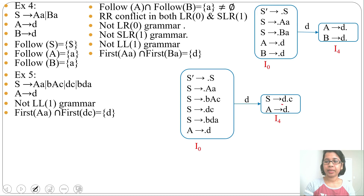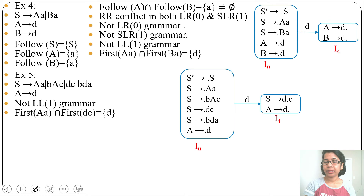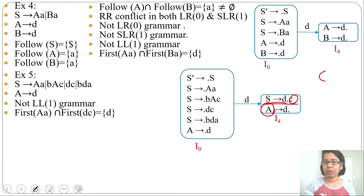In state i4 there is a shift-reduce conflict in LR0 — one state contains one shift plus one reduction. A → d• is a reduction and by 'c' it will go to another state where S → dc• is a reduction. So there is shift plus reduction — SR conflict in LR0. Now to check if this is an SR conflict in SLR1, we need to check FOLLOW(A) ∩ {c}. If they share a common element then there is a shift-reduce conflict in SLR1.